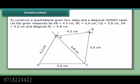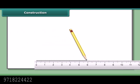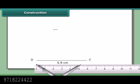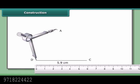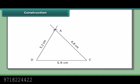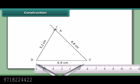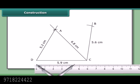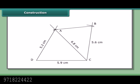Constructing triangle ADC: Draw DC. With C as center and radius 5.6 cm, draw an arc on the other side of AC. With A as center and radius 4.5 cm, draw another arc to cut the previous arc at B. Join CB and AB. Then ABCD is the required quadrilateral.